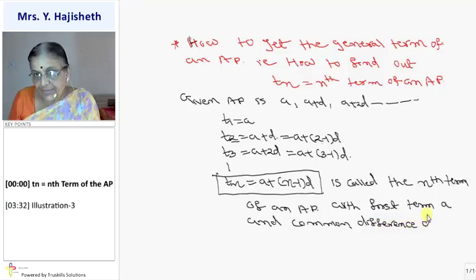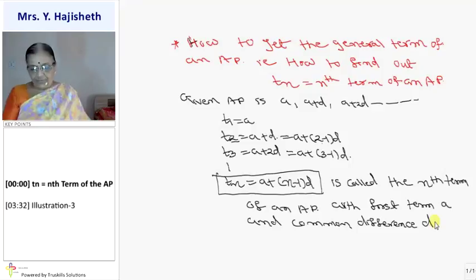With first term is A and common difference D, clear? This is a formula for AP. It's a very important formula of an AP, and your exercise 5.2 is totally based on this formula.